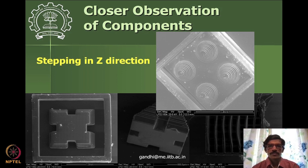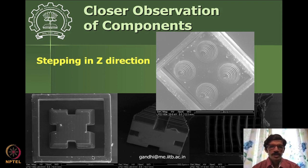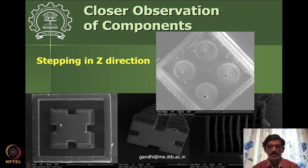If you see what we produced in the last study, the microprinting technology produced components which have this layered kind of structure. These are at a micro scale — this is a 1 mm kind of distance here, and in such a small distance you can print various kinds of components. But you can see that the slanted surfaces will have this stepping effect, because we are stepping in the Z direction every time.